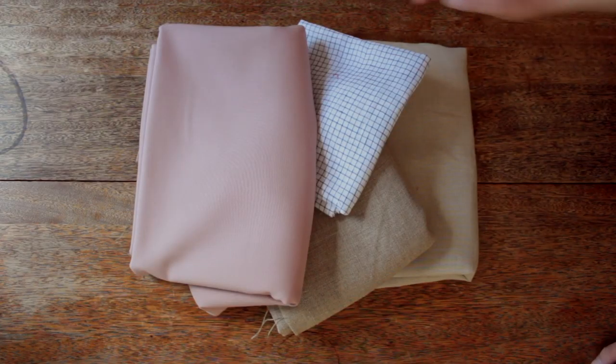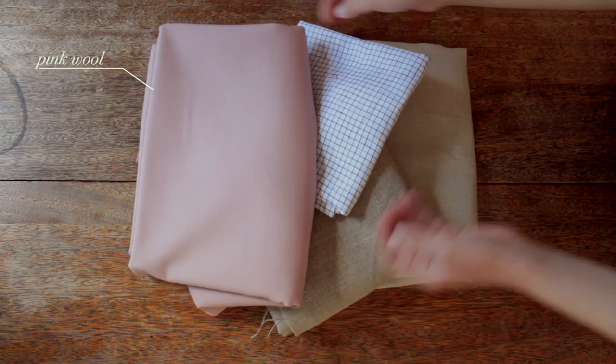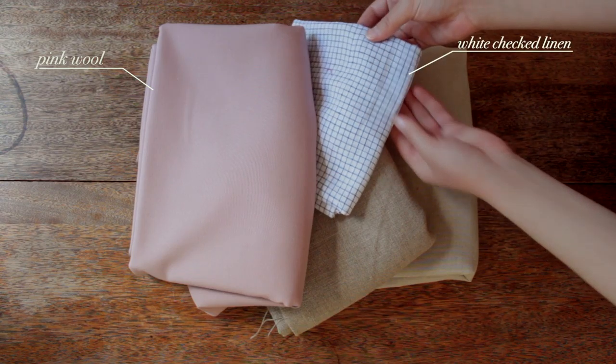And so I wanted to remake these by hand using authentic period techniques, and I thought I'd document the process. I'm going to be using a pink wool for the outer layer, and then an inner layer of white checked linen.